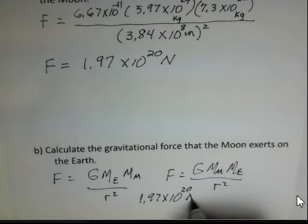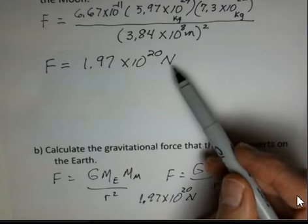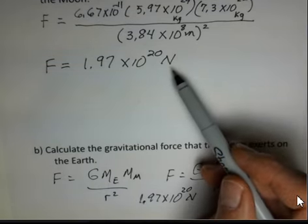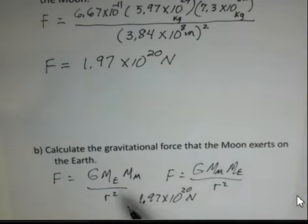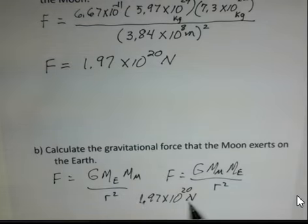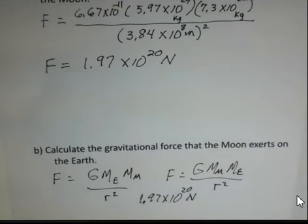And that force is 1.97 times 10 to the 20th. Another example of Newton's third law. The Earth pulls on the Moon, 1.97 times 10 to the 20th Newtons. The Moon pulls on the Earth, 1.97 times 10 to the 20th Newtons. These two forces do not add to zero because they act on different objects. It's illegal to add them, even though they have opposite directions in the same magnitude.